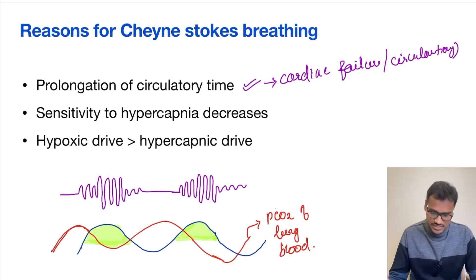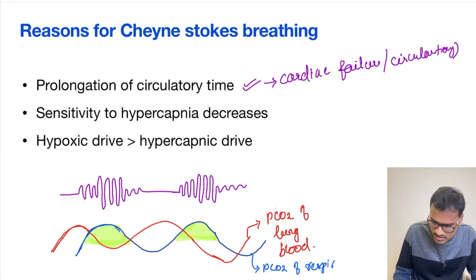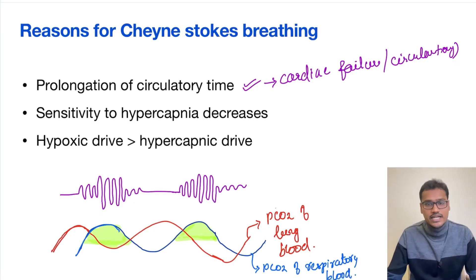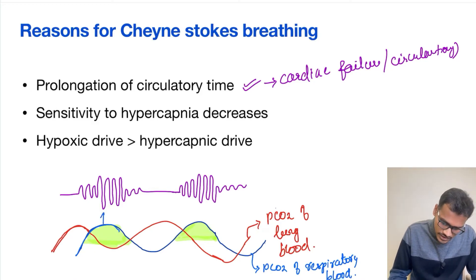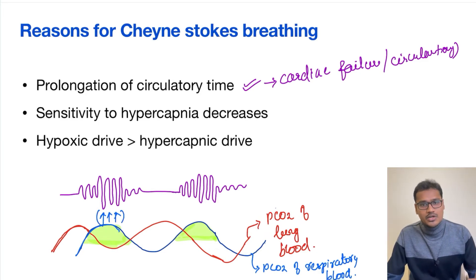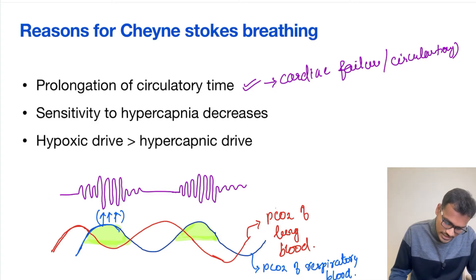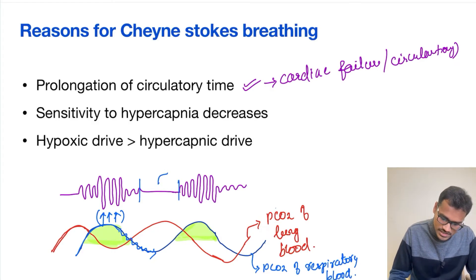The blue curve represents the PCO2 of respiratory neurons. The respiratory neurons receive the same increase in PCO2, but a little delayed. So when there is a large accumulation of PCO2 reaching the brain all at once, it causes a sudden increase in respiration. Due to this, more and more CO2 is eliminated, so the curve drops down. Because of this fall in CO2, the respiratory neurons are no longer stimulated, causing the condition called apnea.